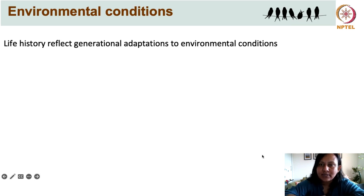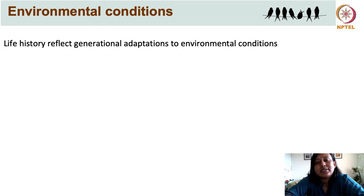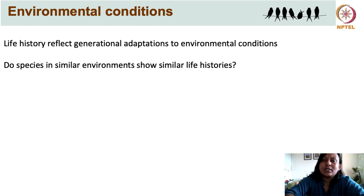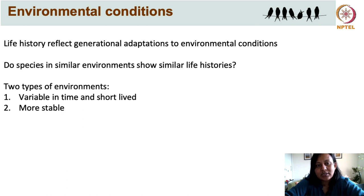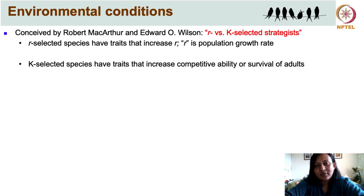Life history is an outcome of evolution which occurs over many generations and likely reflects adaptations to environmental conditions in which natural selection occurred. But does that mean that species occupying similar environments will show similar life histories? To answer this, we can consider two broad types of environments: variable and short-lived, versus relatively stable over time. Based on these two types, Robert MacArthur and E.O. Wilson identified two different life history strategies adopted by species in these contrasting environments.